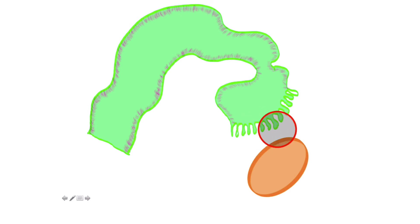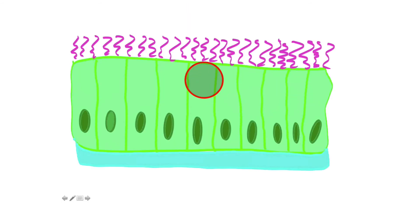These represent fimbriae. These are finger-like projections that sweep an ovulated egg from this space right here into the uterine tube. The uterine tubes and the fimbriae are not physically connected to the ovary.